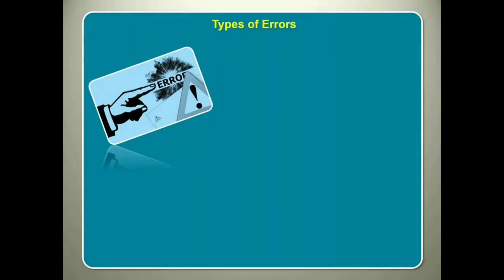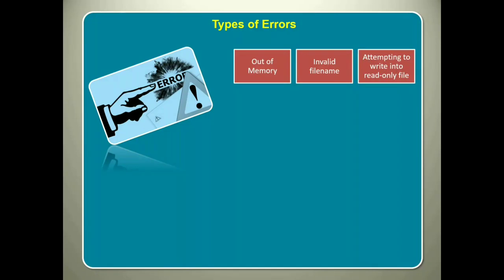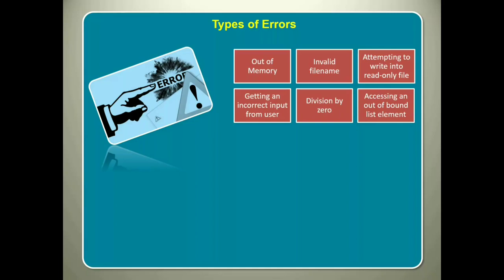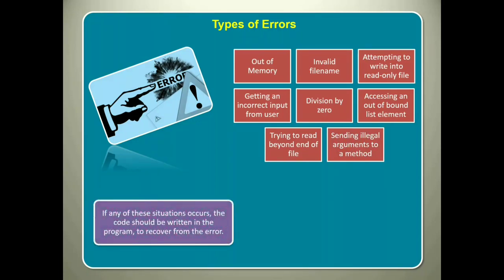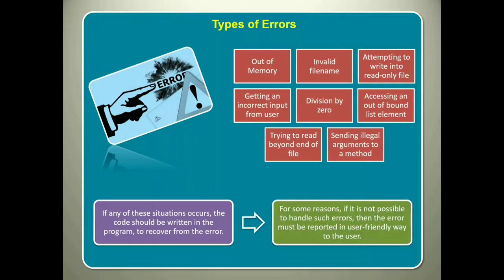Such errors can be of following types: out of memory, invalid file name, attempting to write into read-only file, getting an incorrect input from user, division by zero, accessing an out of bound list element, trying to read beyond end of file and sending illegal arguments to a method. If any of these situations occurs, you should write the code in the program to recover from the error. For some reasons, if it is not possible to handle such errors, then you must report it in user-friendly way to the user.